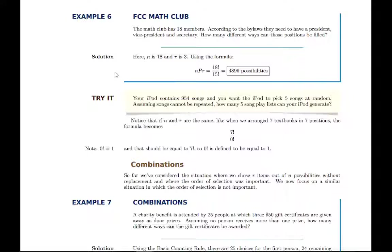So permutations are when we're arranging things in positions. And so we're selecting from some group. Like here, we're selecting from a group of 18 people, three people to fill three positions, and we're organizing them in these three positions.